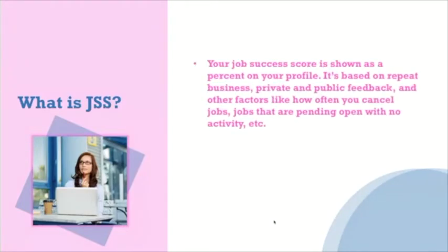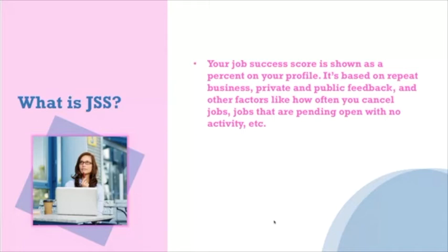So what actually is a Job Success Score? It's shown as a percentage on your profile and it's based on many factors: the public feedback your client leaves, the private feedback they leave directly with Upwork, repeat business, how often you're canceling jobs, how many jobs are open with no activity, and more. There's no 100-point checklist. My score has fluctuated between 92 and 99 percent for my entire time on Upwork, and I still haven't exactly figured out what factors they're using.